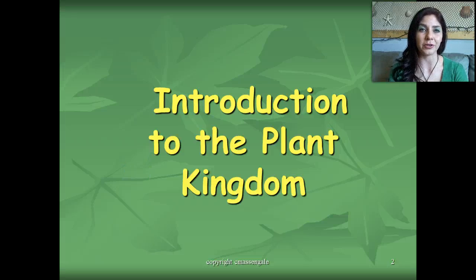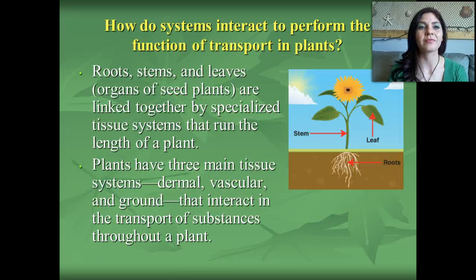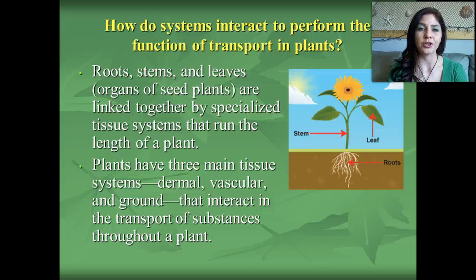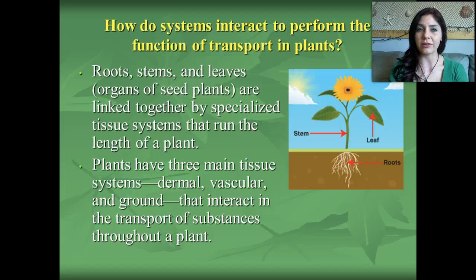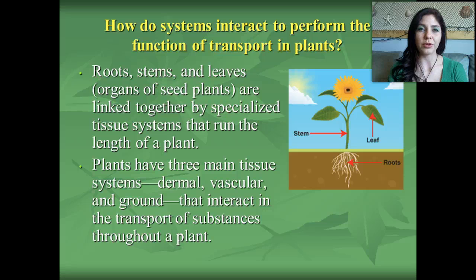We're going to begin with plant transport using xylem and phloem. How do systems interact to perform the function of transport in plants? Roots, stems, and leaves — which are the organs of seed plants — are linked together by specialized tissue systems that run the length of a plant. Just like we have a heart and lungs and kidneys, plants have their own organs as well.